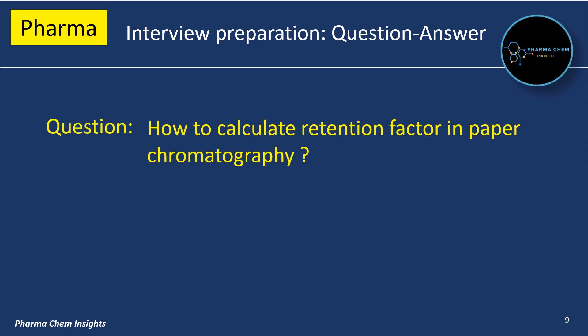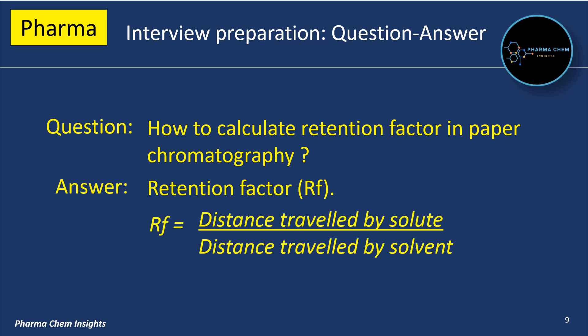Next Question: How to calculate retention factor in paper chromatography? The retention factor RF is calculated as: RF = distance travelled by solute divided by distance travelled by solvent.